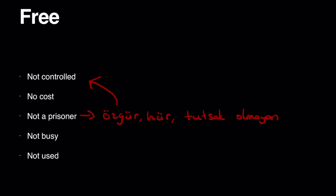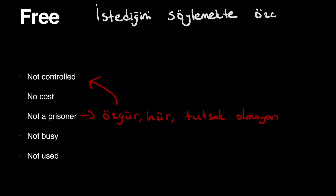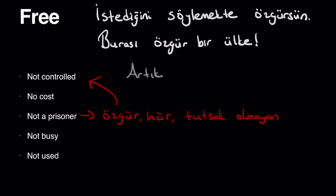Third definition: özgür, hür, tutsak olmayan. Özgür also means not controlled. İstediğini söylemekte özgürsün — you're free to say what you want. Burası özgür bir ülke — we always hear this in American movies — this is a free country. Artık hür bir vatandaşsın — that means you're a free citizen now.